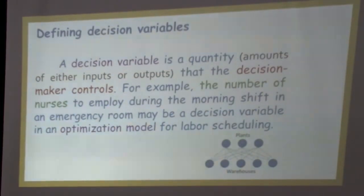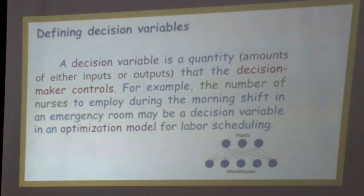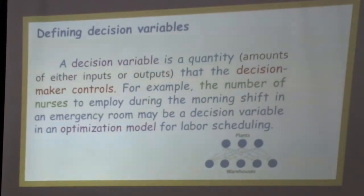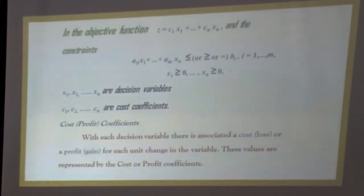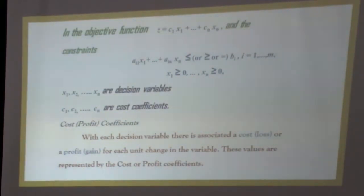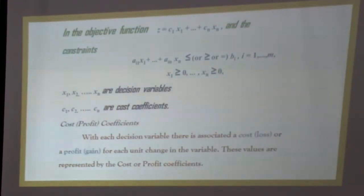A decision variable is a quantity that the decision maker controls — for example, the number of nurses to employ during the morning shift in an emergency room may be a decision variable in an optimization model for labor scheduling. In the objective function Z = C₁X₁ + ... + CₙXₙ, X₁, X₂, ..., Xₙ are decision variables and C₁, C₂, ..., Cₙ are cost coefficients. Cost coefficients represent the cost, loss, or profit gain for each unit change in the variable.